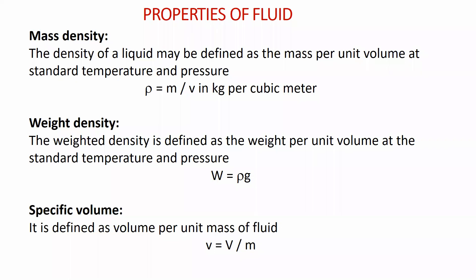Fluid properties include density — mass density — defined as mass per unit volume at standard temperature and pressure. As temperature and pressure change, density also changes. It is typically represented in kg/m³. Weight density is defined as weight per unit volume at standard temperature and pressure: W = ρg. On earth where g ≈ 10 m/s², weight equals mass times g.